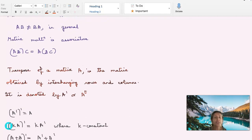Transpose of a matrix A is the matrix obtained by interchanging the rows and columns. So the first row becomes the first column, second row becomes the second column, and likewise. And it is denoted by either A dash or A transpose.